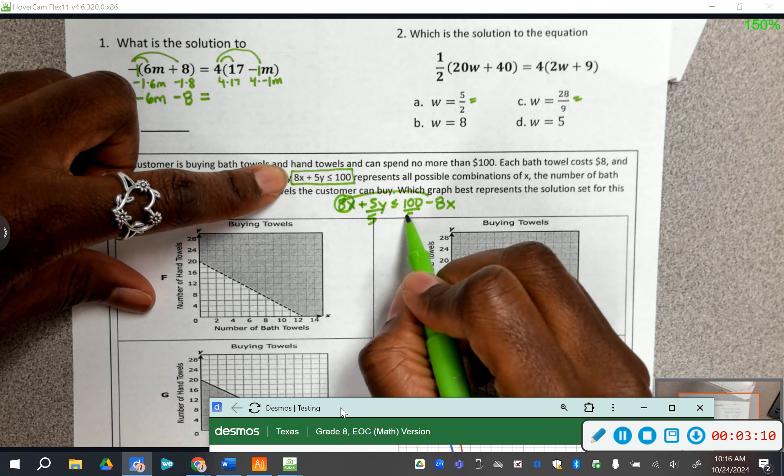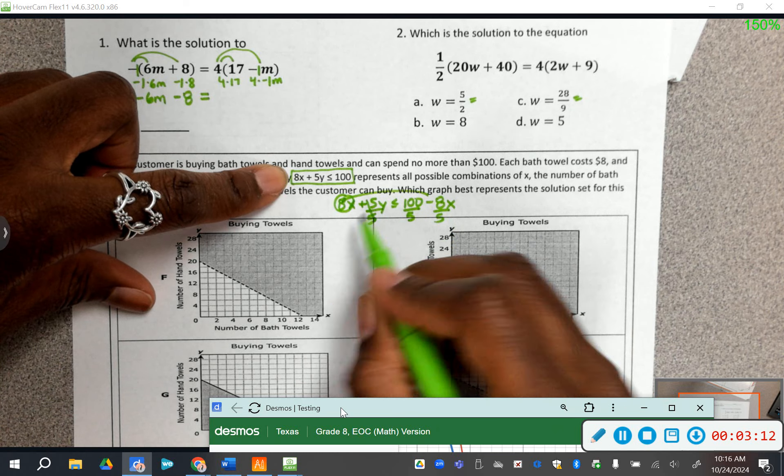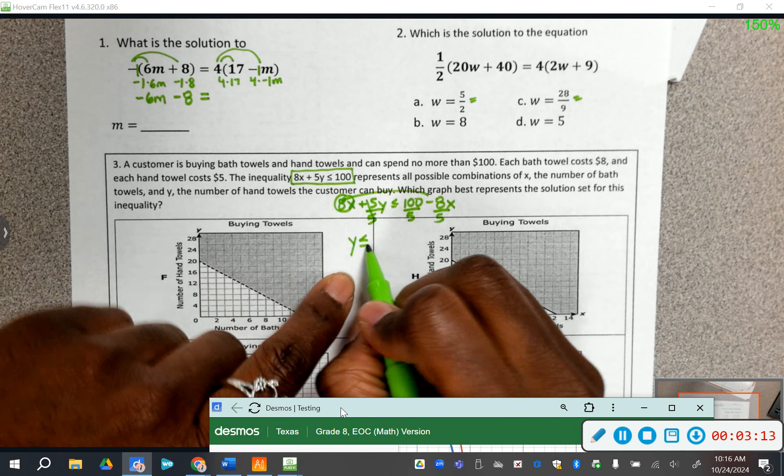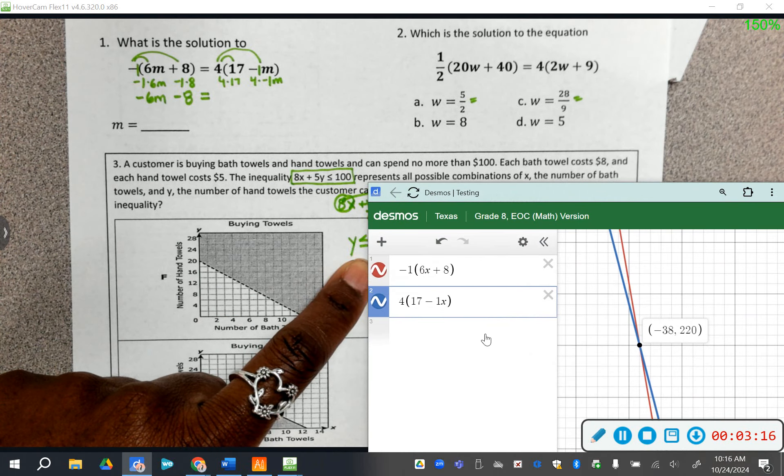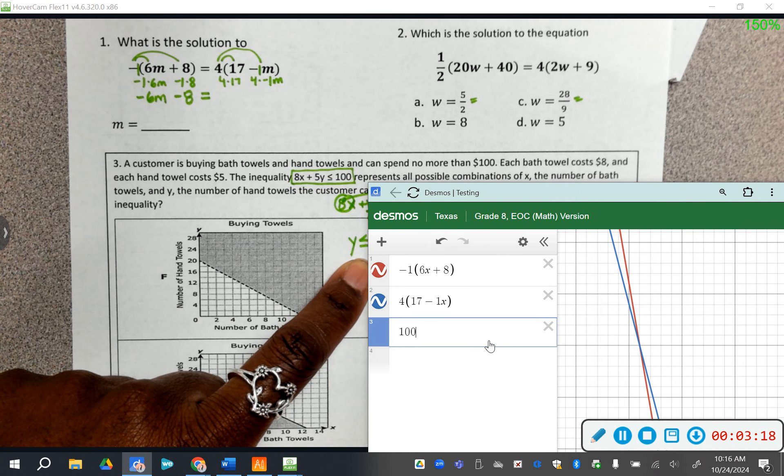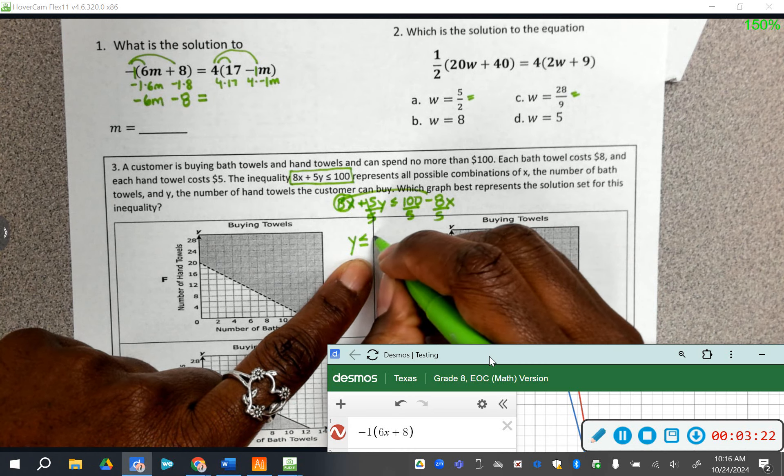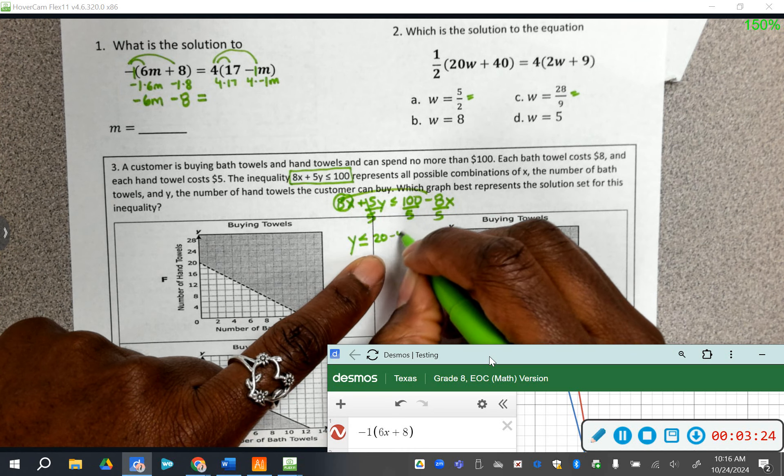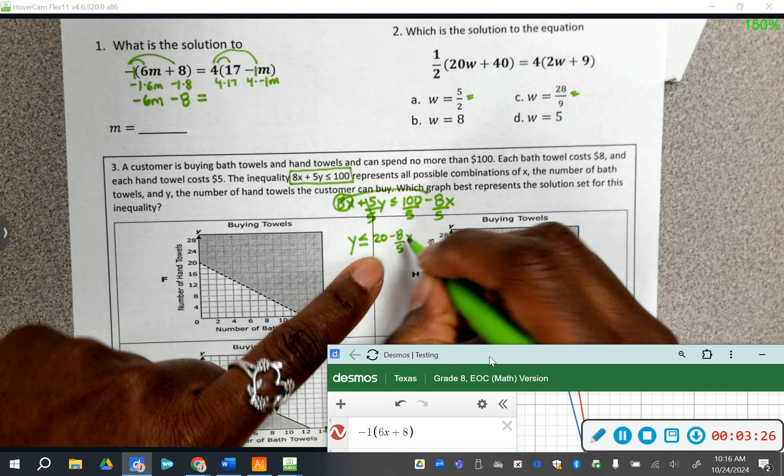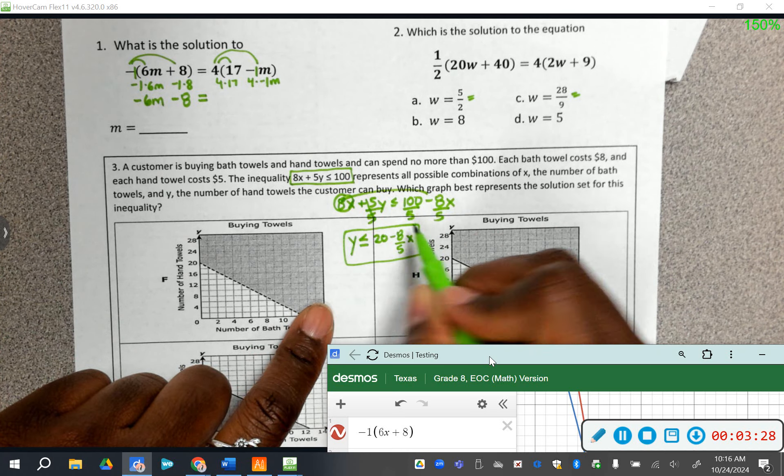We're going to move our 8 over here, because it's in stupid standard form, and we have to get it out of standard form before we can do anything. Divide everything by what's with the y value. So that's going to be y is less than or equal to, let's see, 100 divided by 5 is 20. So that's going to be 20, and then I know this is going to stay as negative 8 over 5 with the x.